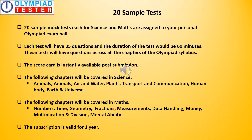There are 20 sample tests, also called mock tests, each for Science and Maths, assigned to your Personal Olympiad Exam Hall. We recommend taking these tests about 45 days before the actual Olympiad Exam. Each test has 35 questions with a duration of 60 minutes plus 5 minutes for reading instructions, covering questions across chapters of the Olympiad syllabus. The scorecard is instantly available post submission and the subscription is valid for one year.